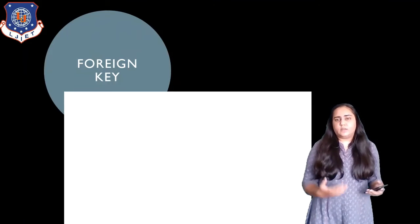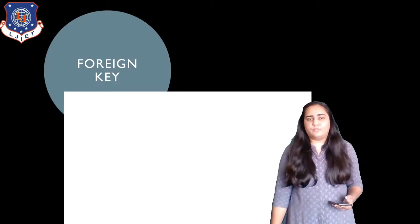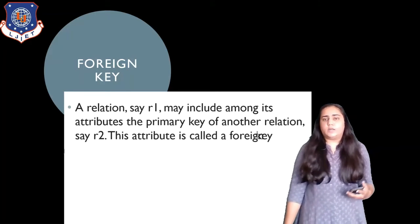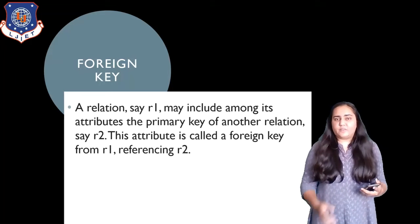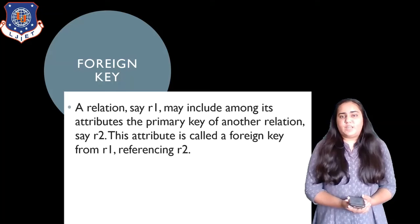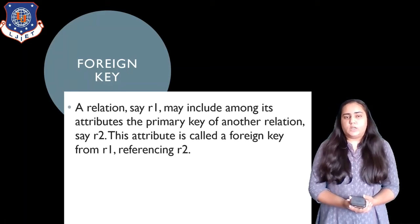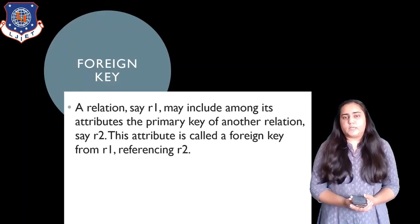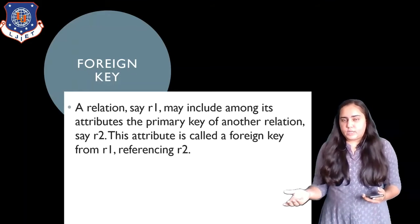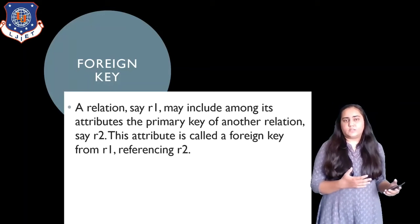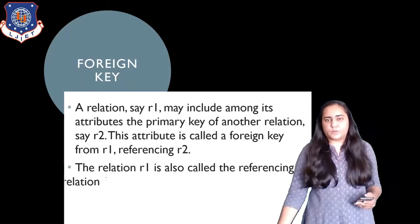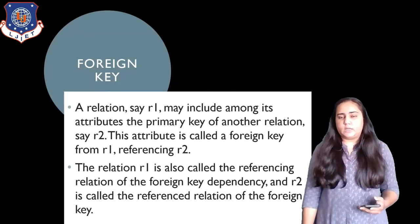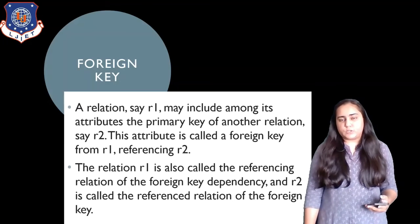There is also a concept of foreign keys in relational databases. A foreign key is where a relation R1 may include among its attributes the primary key of another relation R2 — this attribute is called a foreign key from R1 referencing R2. R1 is known as the referencing relation of the foreign key dependency, and R2 is called the referenced relation.